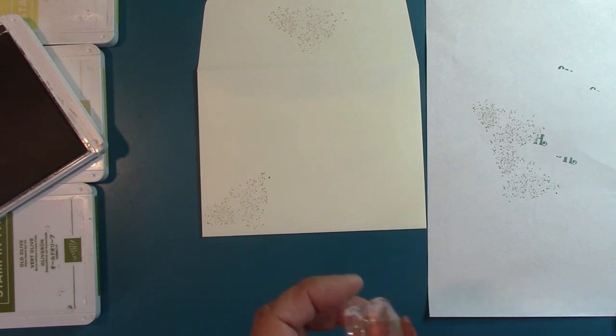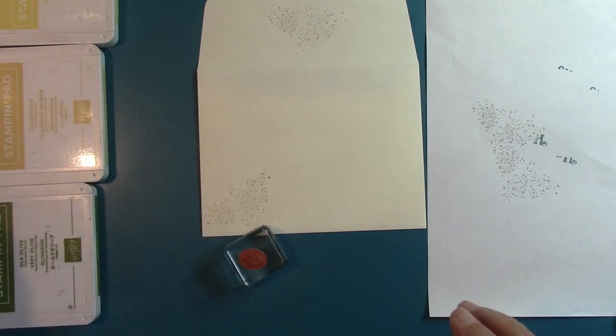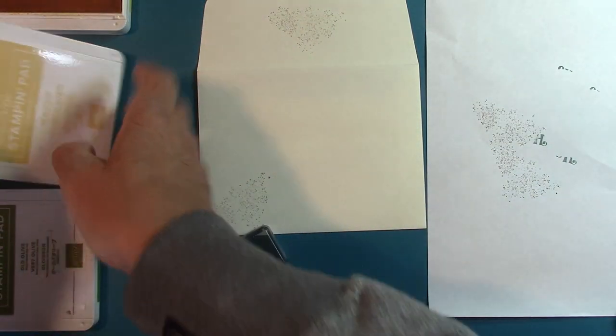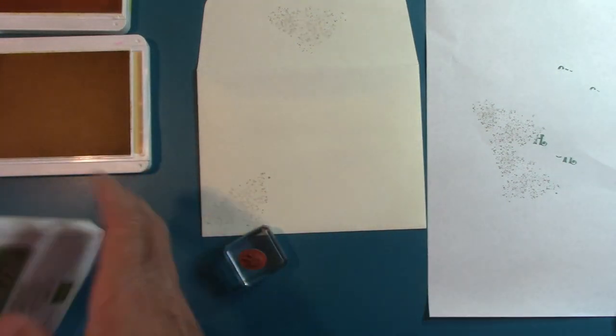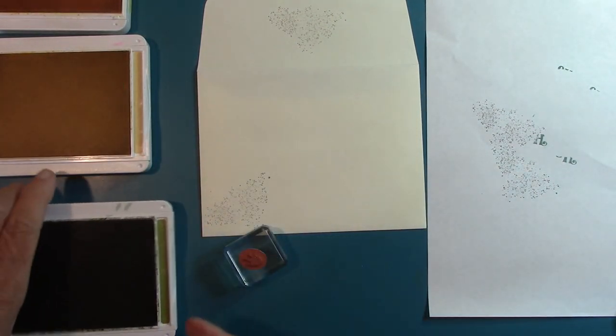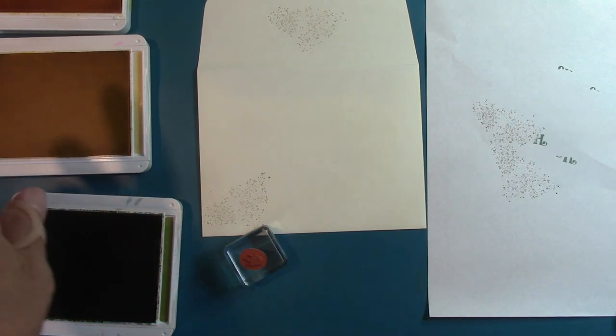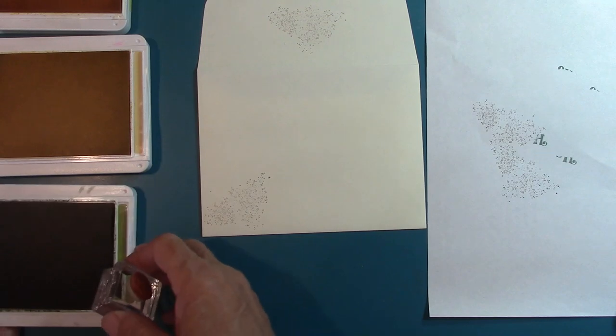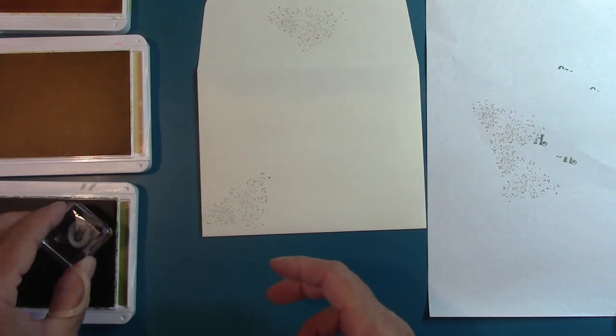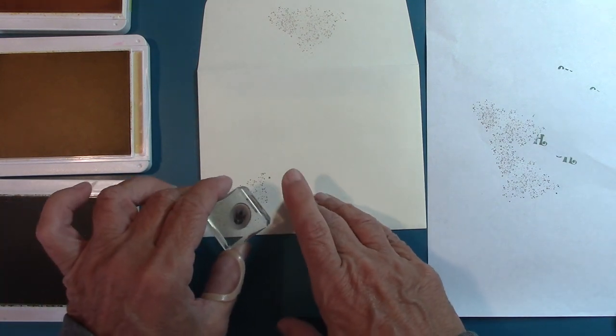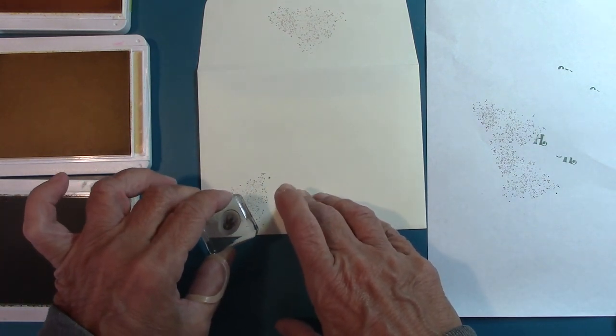And I'm going to use, let's see, let's use some Daffodil Delight, some So Saffron, which these two are so close in color, and Old Olive. And I think maybe instead of the So Saffron, well, I use So Saffron on the inside. Sometimes I thought I should have used some Cajun Craze, but I just wanted that as my frame. So, that's how that worked out.